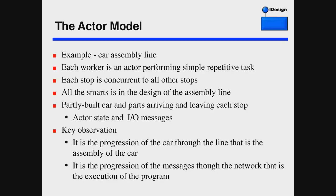Let's look at the car assembly line. Each worker is an actor performing a very simple repetitive task — pick a piece, drill it, switch it, move it. Each stop in an assembly line is concurrent to all other stops; we don't build a car sequentially like we execute a program. While each individual stop is dead simple — even someone who barely finished high school can execute it — the assembly line in aggregate can be fairly complex. The partly-built car and parts arrive and leave each stop — an analogy to actor state and IO messages. A key observation: it's the progression of the car through the line that is the assembly. Exactly the same is true in an actor-based system: it's the progression of the message through the network that is the execution of the program.